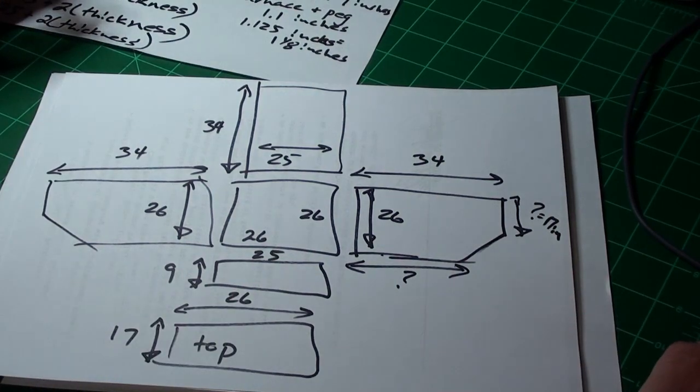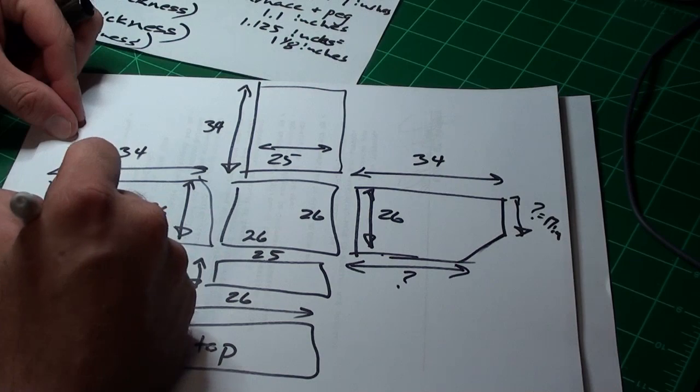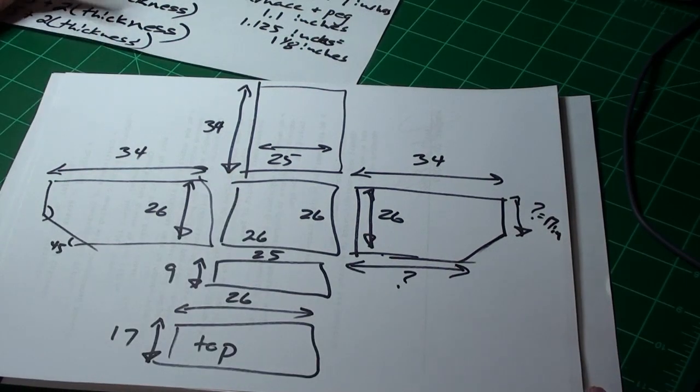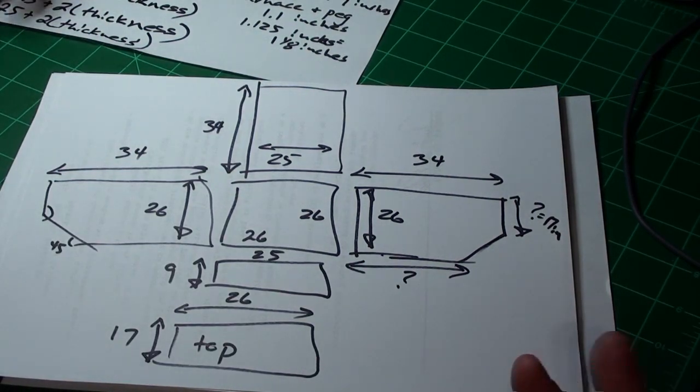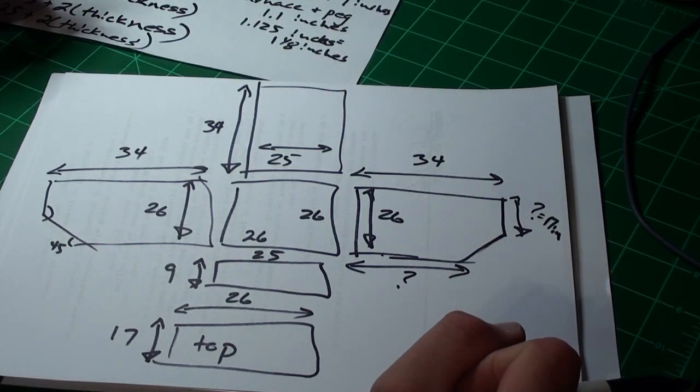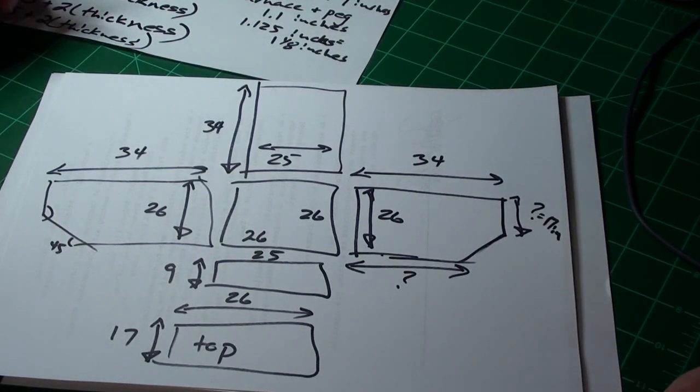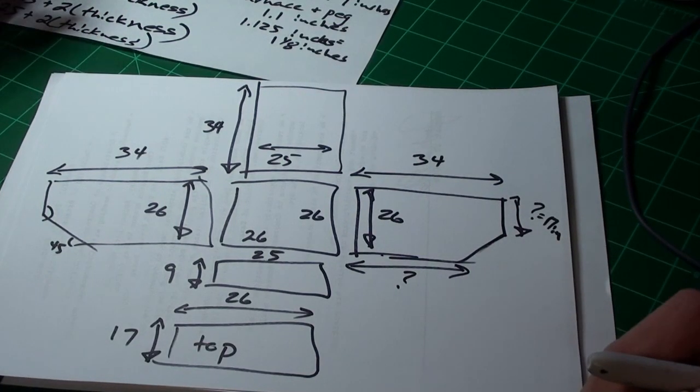These were 45 degree angles right here, easy to cut out with a carpenter square. You can buy the kind that have 45 degree angles in them, so it was really easy to figure out and cut.